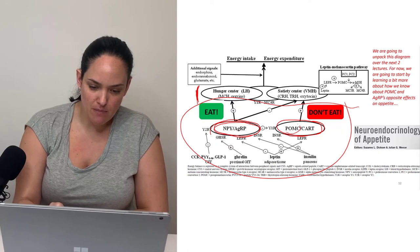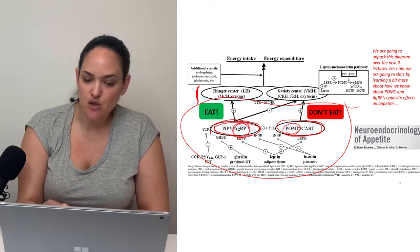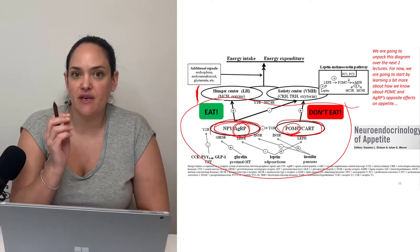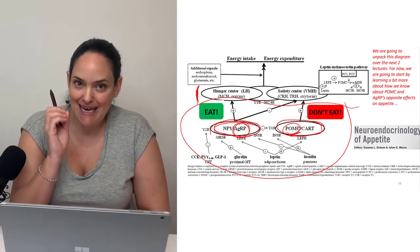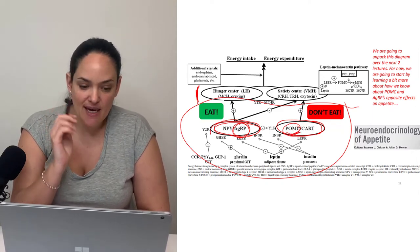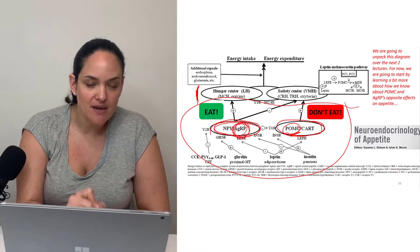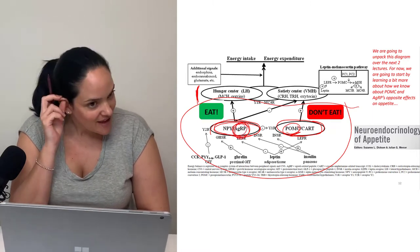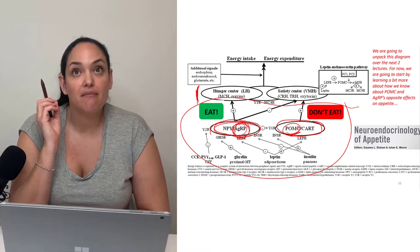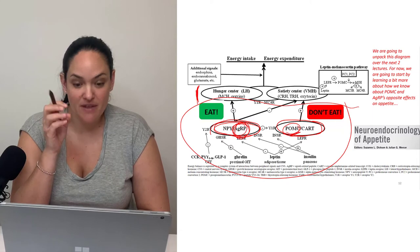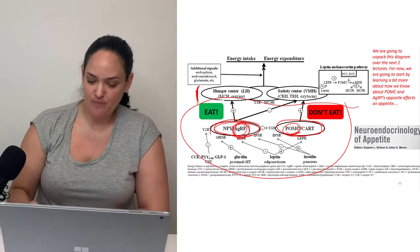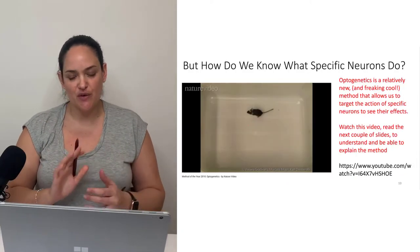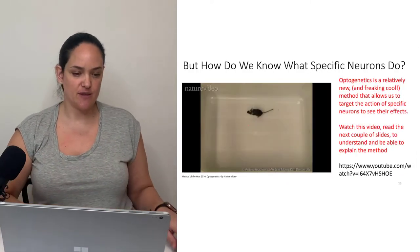We're going to look mostly at POMC and also at AGRP. When you see POMC, think 'don't eat' — think satiety. When you see AGRP, think 'eat' — think hunger, think appetite. And know that there are cross signals between them.